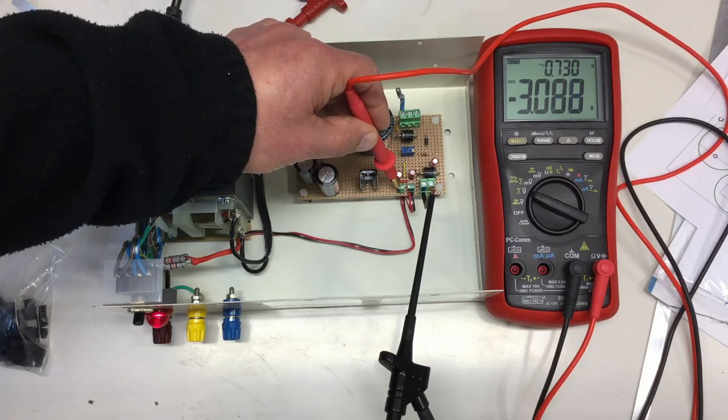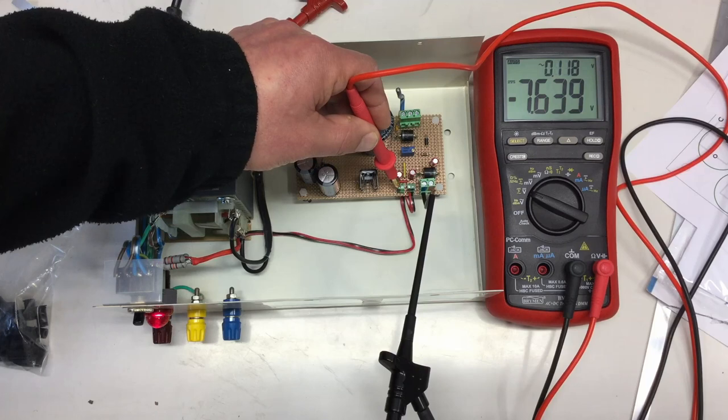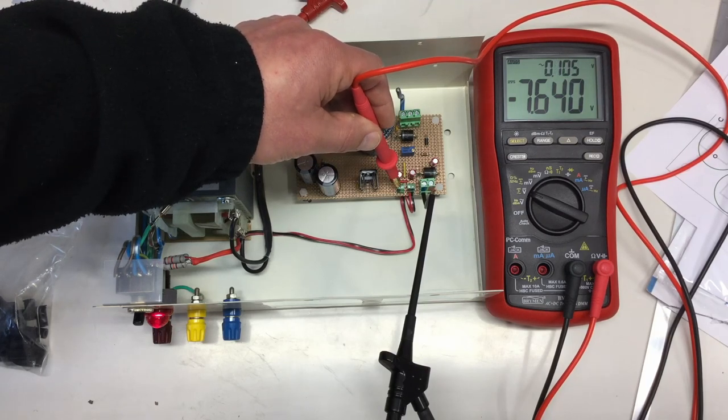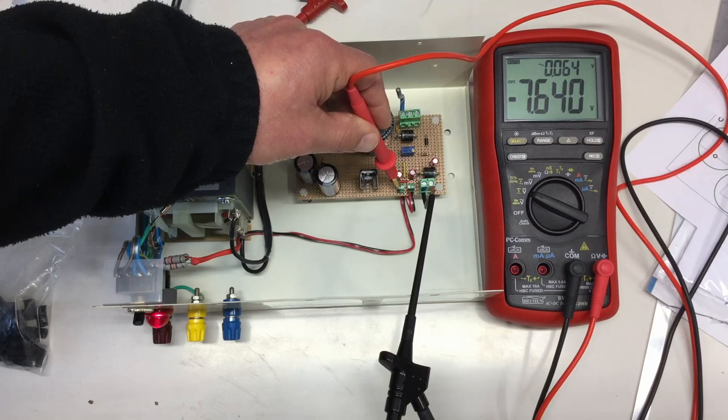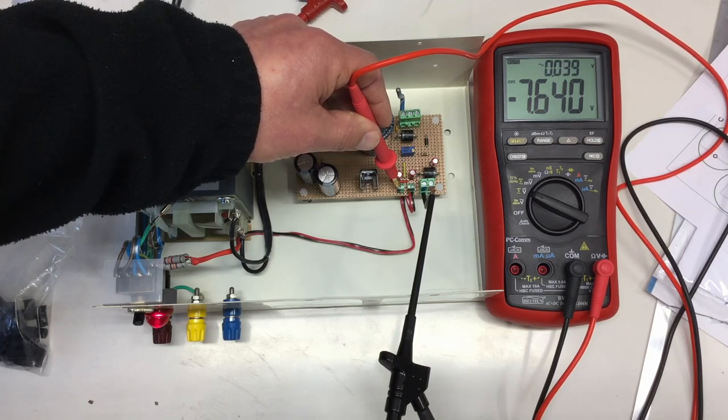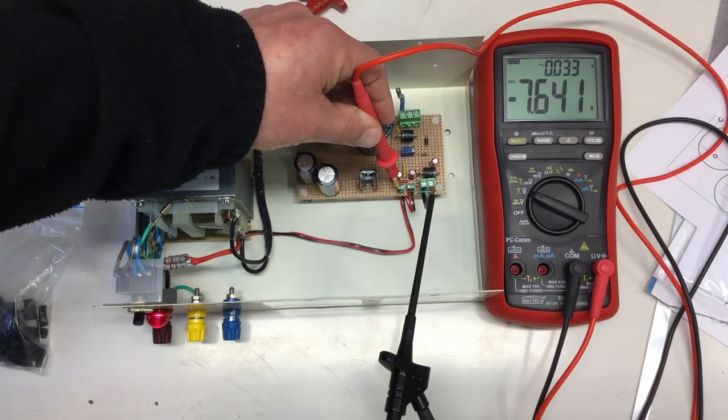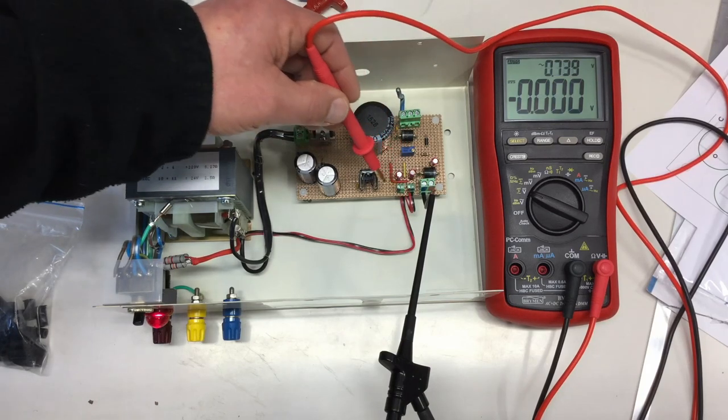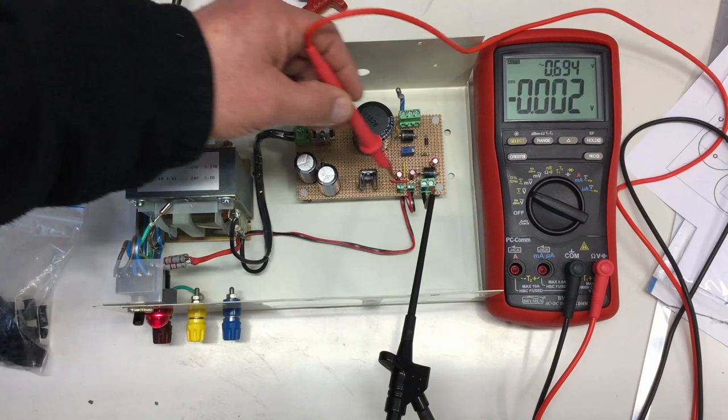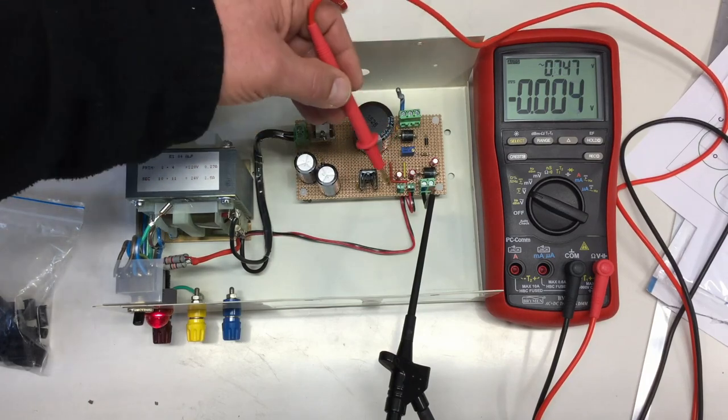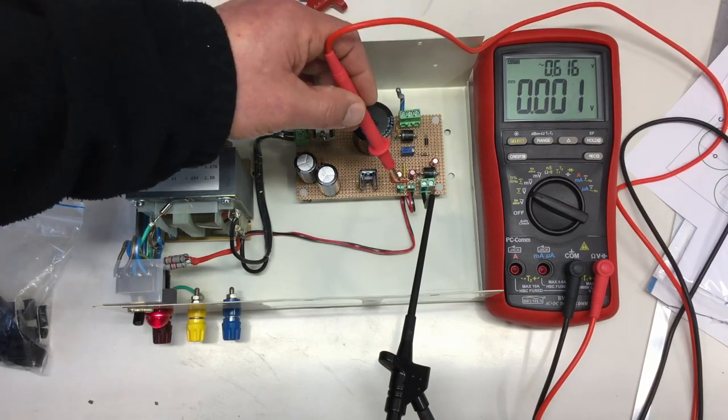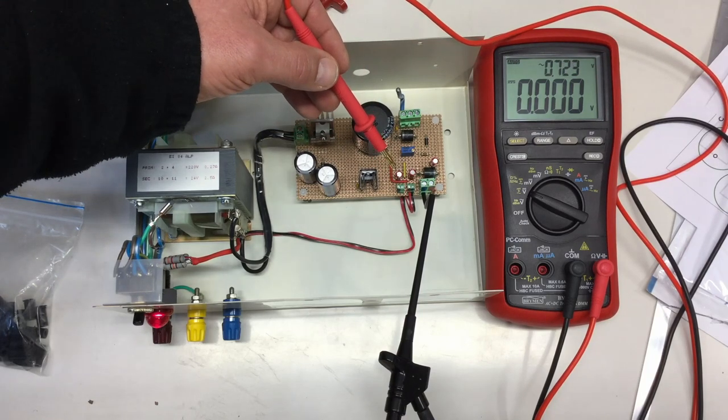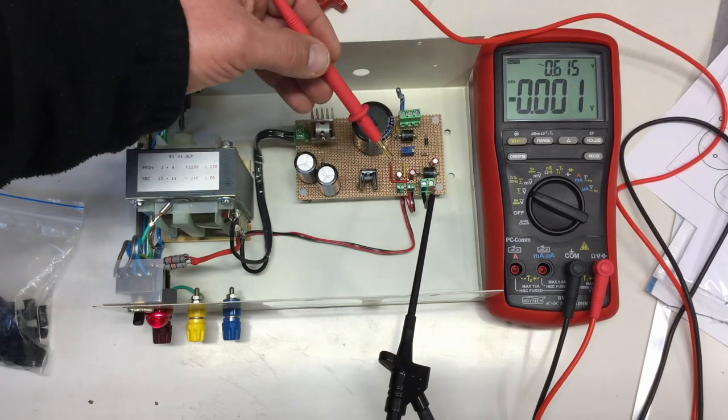Without any load, I think it needs a few milliamps. Without any load it won't regulate. But we have a negative voltage there compared to ground, that's nice. But I should somehow put some load on that thing here. I have to look at the circuit diagram how to do that without blowing anything off.